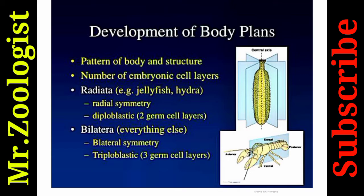The embryonic layers are mesoderm, ectoderm, and endoderm. Radiata — for example jellyfish and hydra — have radial symmetry and are diploblastic: they have only two germ layers, endoderm and ectoderm, and lack a mesoderm. Bilateria includes everything else — they have bilateral symmetry and are triploblastic, possessing three germ layers: endoderm, ectoderm, and mesoderm.